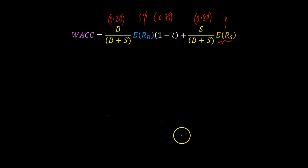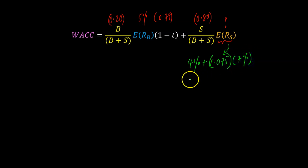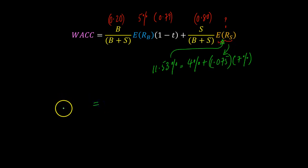Going back to the CAPM formula: the risk-free rate is 4%, Nosebook's equity beta is 1.075, and the expected market risk premium is 7%. This gives a cost of equity of approximately 11.53%. Plugging everything into the WACC equation yields a weighted average cost of capital of approximately 10.01%.